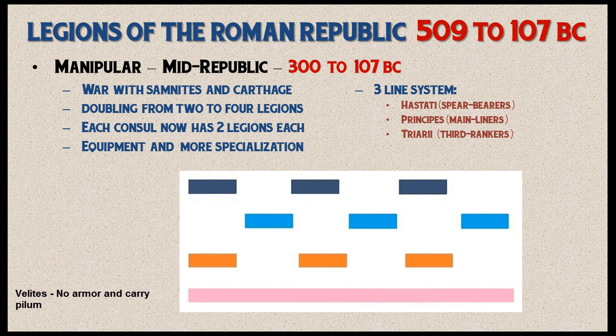The velites did not wear armor but carried a wooden shield and javelins to toss at the enemy. The first line of heavy infantry, the Hastati, were closest to the enemy. They also had a heavy javelin they could toss, but their main attack weapon was the famed Gladius, which became the default sword of the Roman Legion. The Hastati consisted of the youngest soldiers.